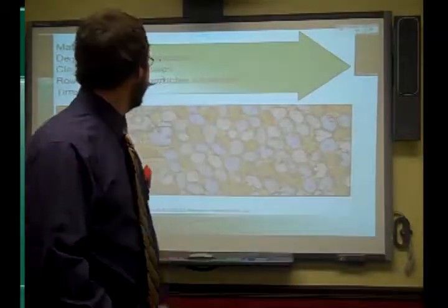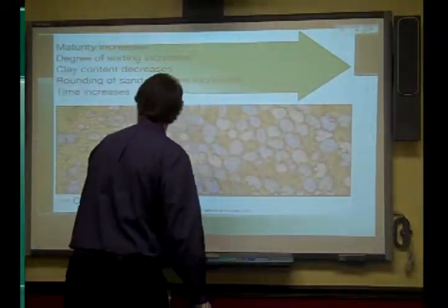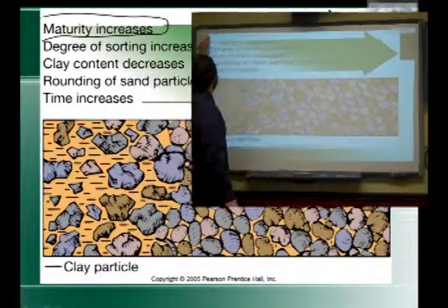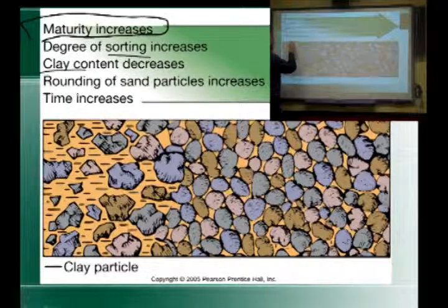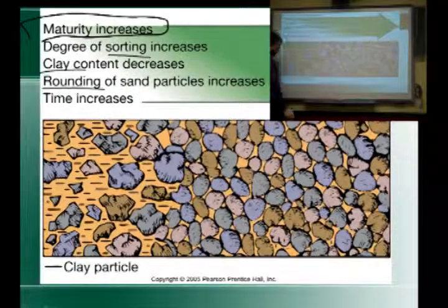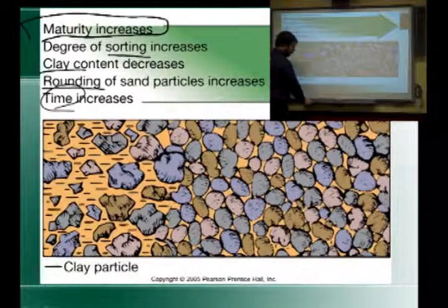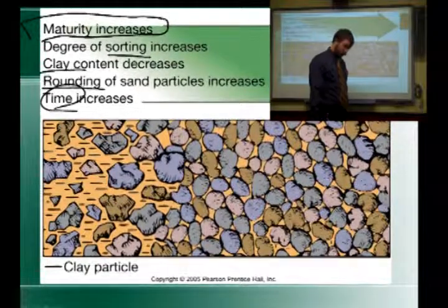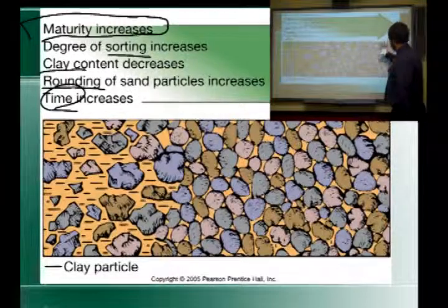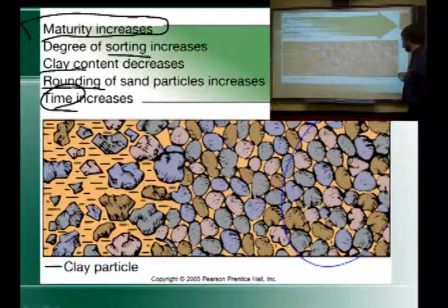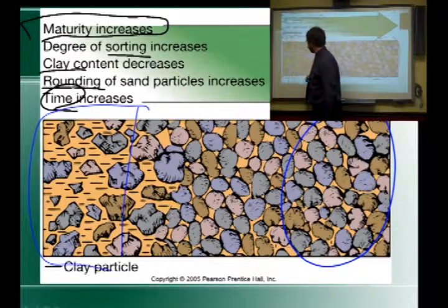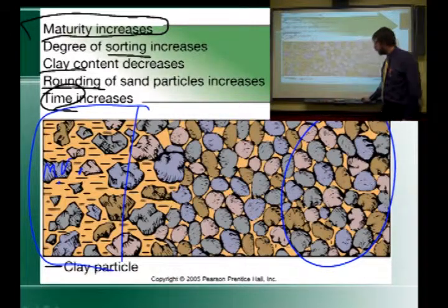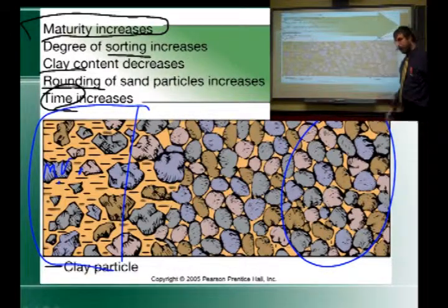We talked about this one already, so we'll just hit it very quickly. As the maturity of the sediment increases — as the sediment gets older — it will become more sorted, more clay-like, more rounded. These sediments on this side of the screen are the older ones; see how they're better sorted. The ones over here being angular and not sorted — big ones mixed in with microscopic things — those are an example of not well sorted.